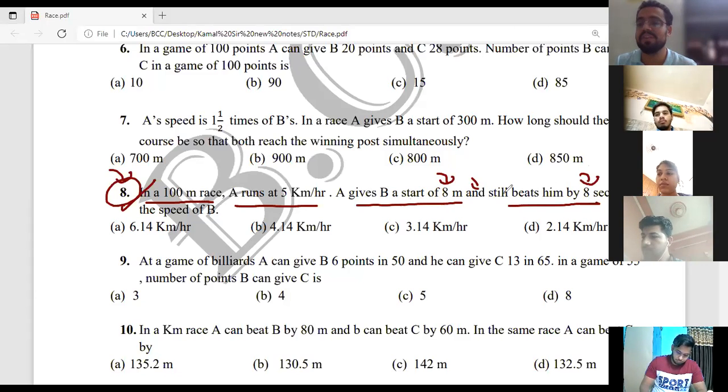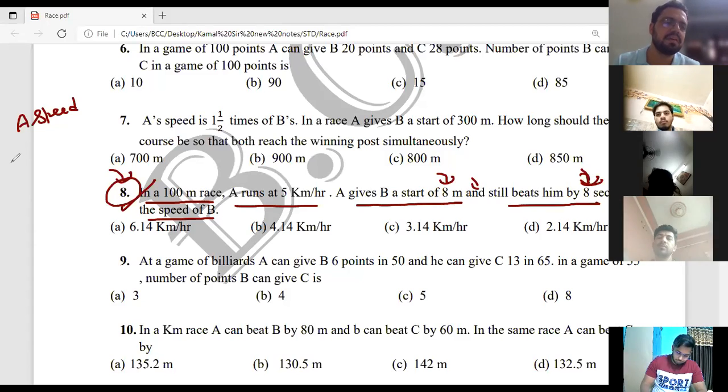A wins by 8 seconds. So, how will you find the speed of B? First, A gives B an 8 second advantage in time.